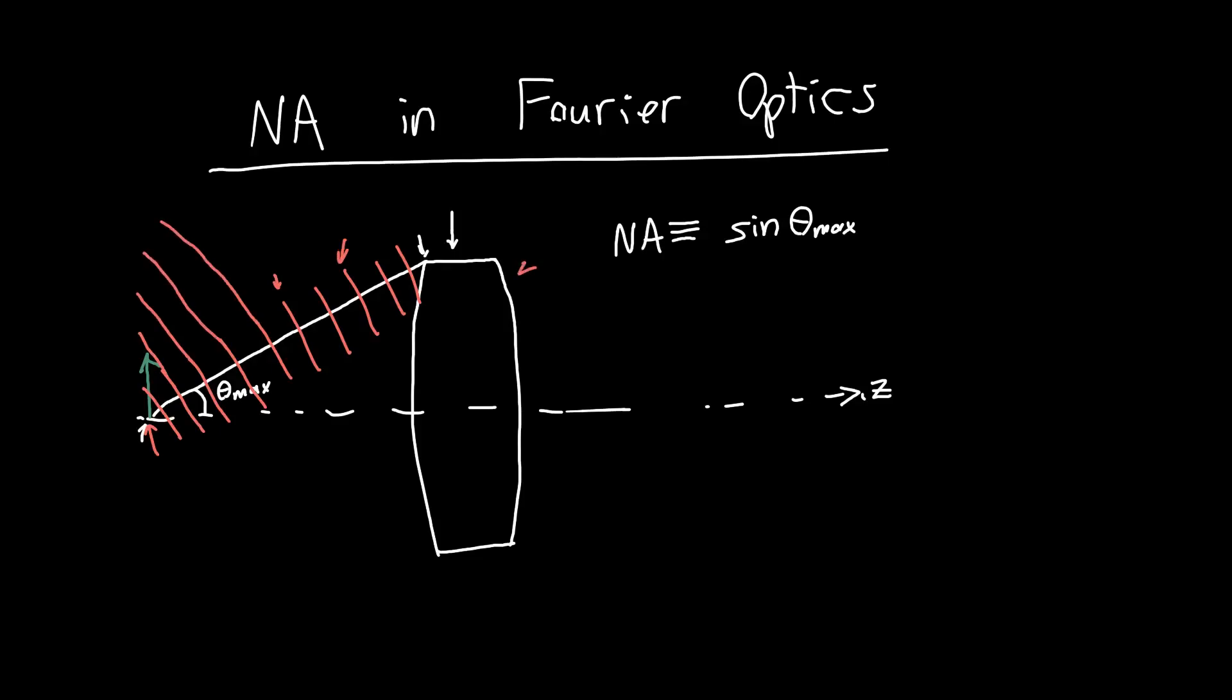But this is the maximum angle plane wave that we're able to detect, that we're able to absorb with our lens. So any higher frequency plane waves, so a plane wave going off in this direction for example, those would get cut off by the aperture of our system, so those would just get blocked and wouldn't get into our lens.